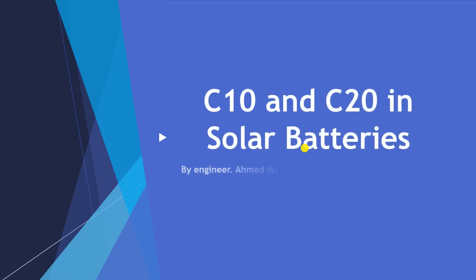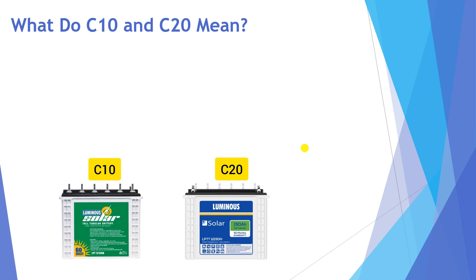In this lesson, we are going to discuss the C10 and C20 ratings in solar batteries. We want to understand what it means to have a C10 rating and a C20 rating. Sometimes you will find batteries — for example, 150 ampere-hour batteries — that have two ratings: C10 and C20. So you might see '150Ah C20' or '150Ah C10'.